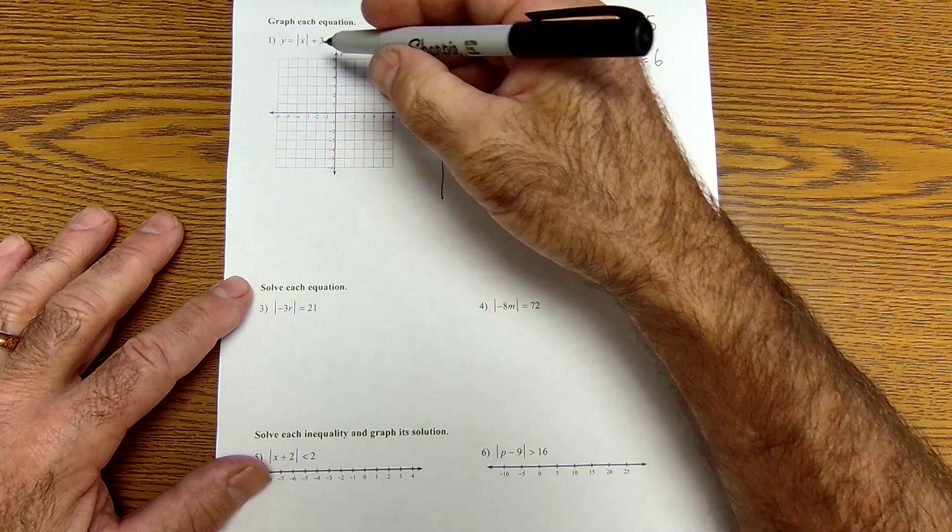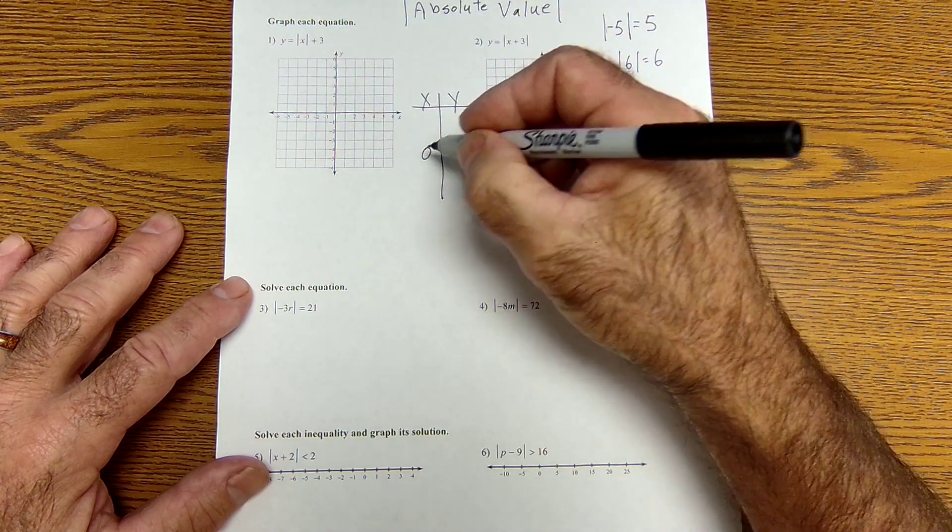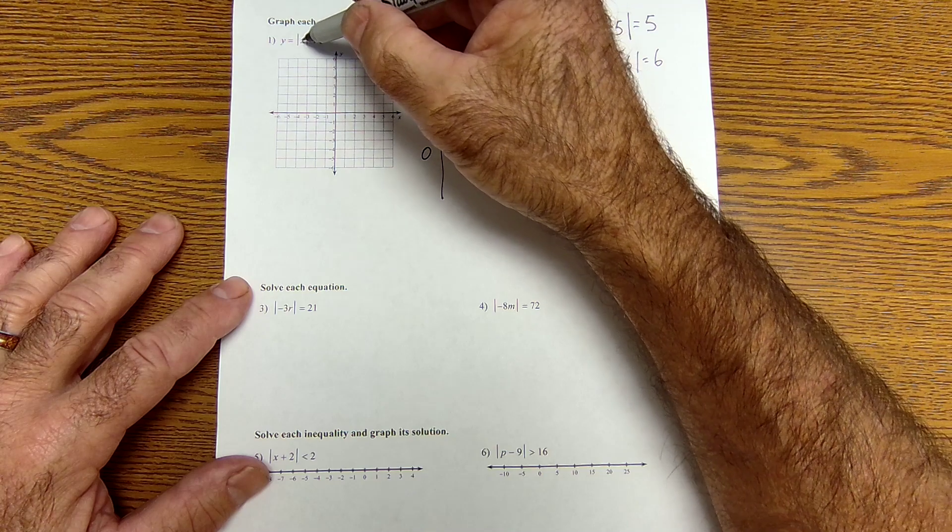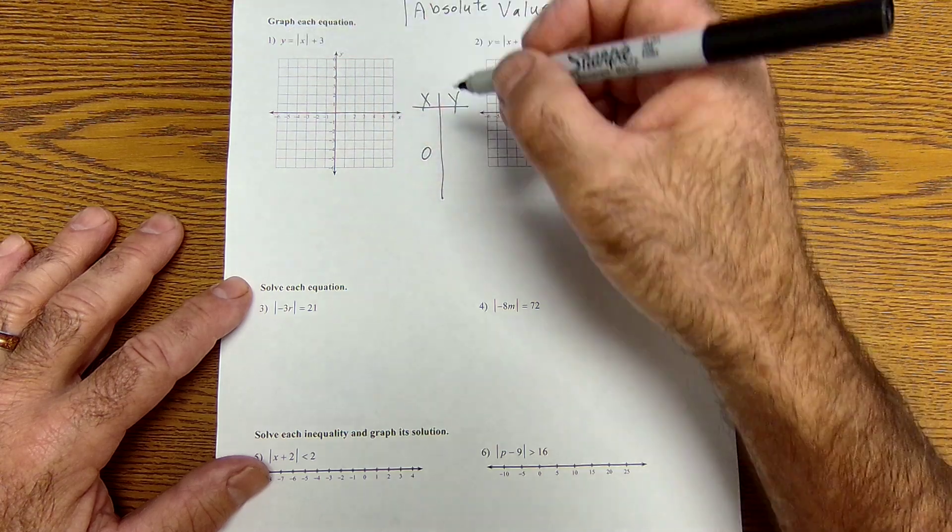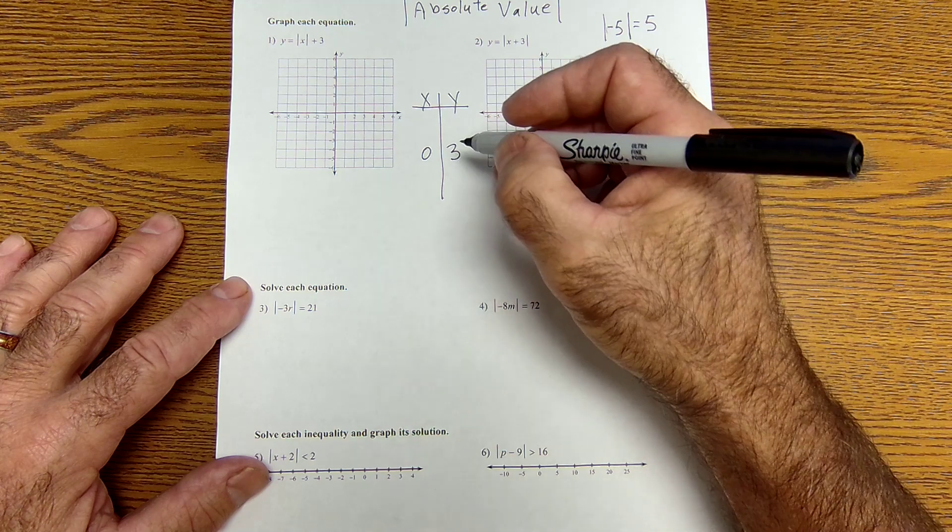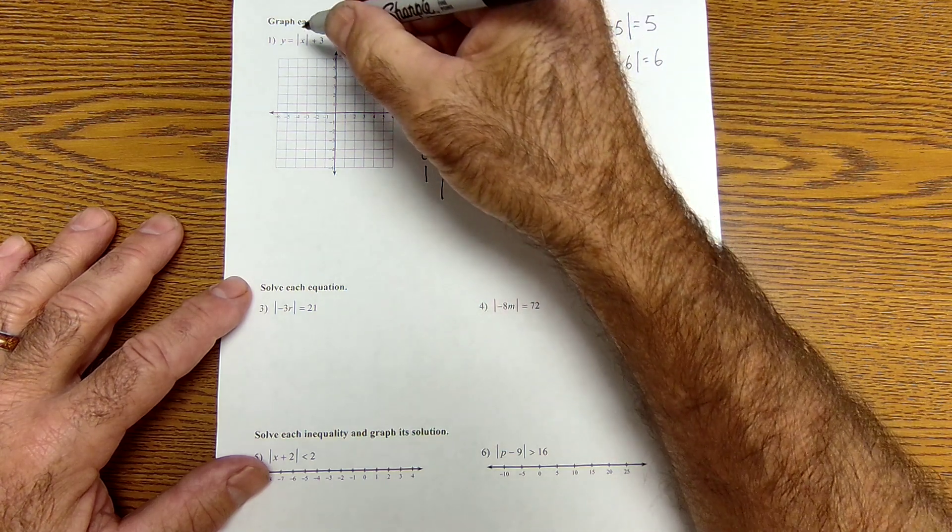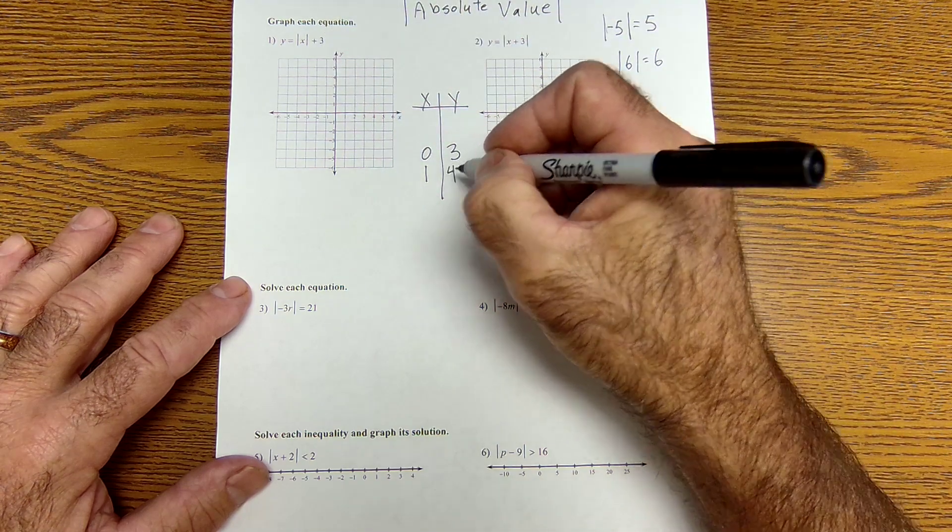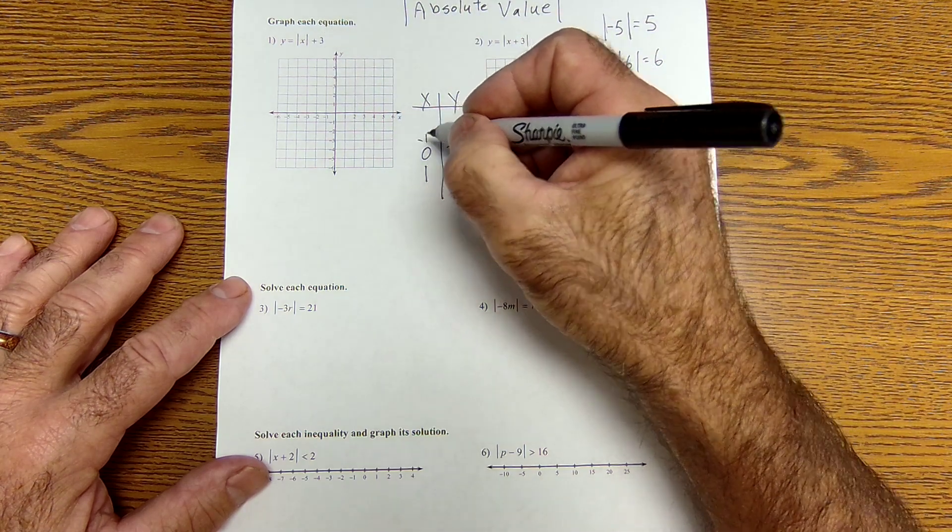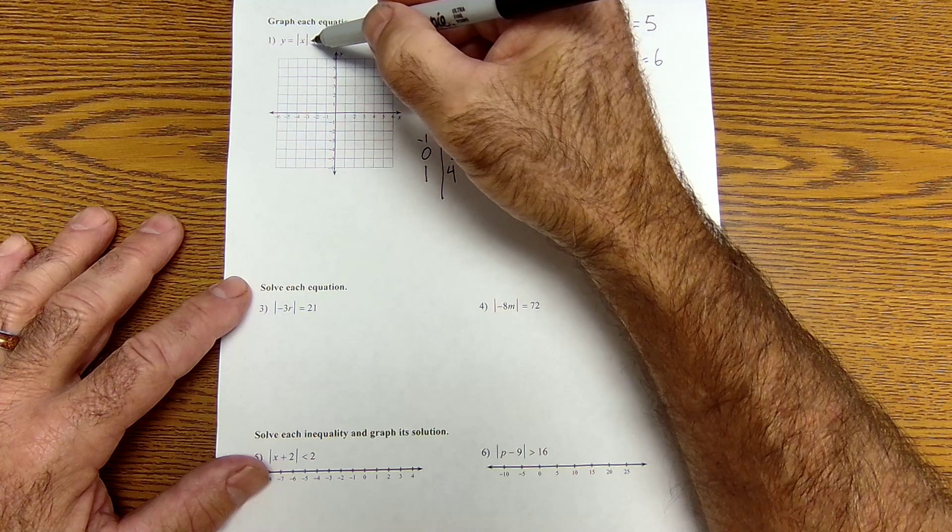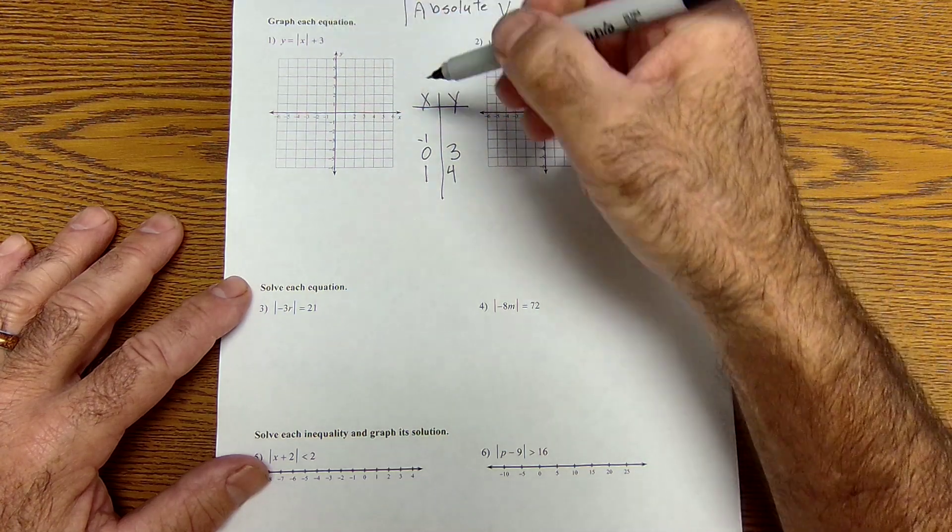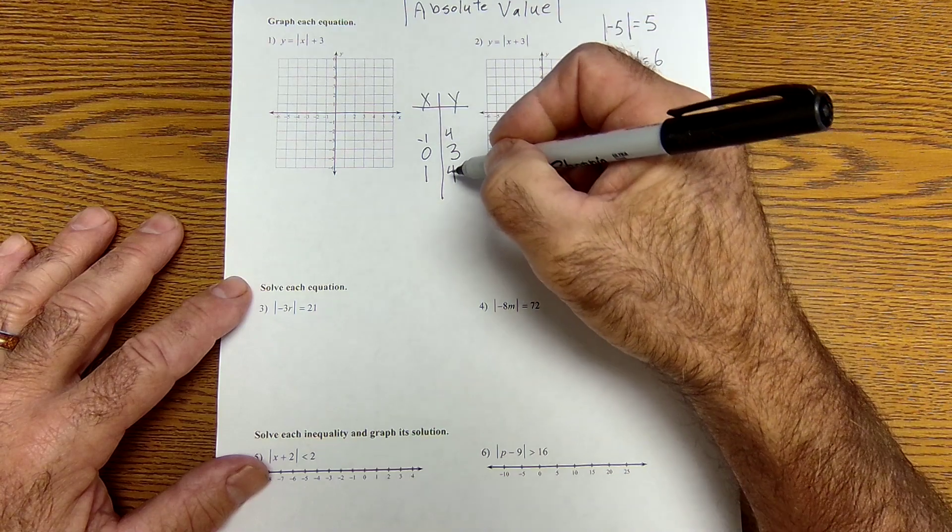A good place to always start is 0. So if I pick 0 for x, 0 goes in there. Absolute value of it's still 0, 0 plus 3. That means y is equal to 3. Pick a 1, absolute value of it, 1 plus 3 is 4. Let's try some negative values. Negative 1, absolute value of that negative 1 becomes positive. So then I have 1 plus 3 is 4.